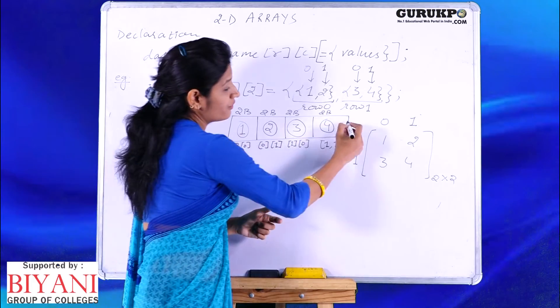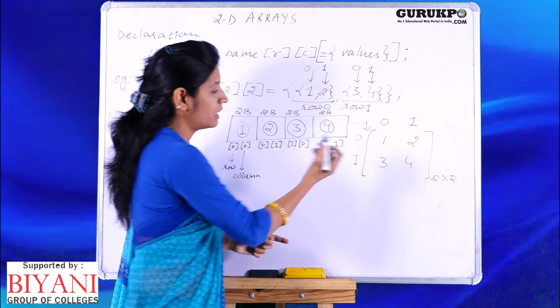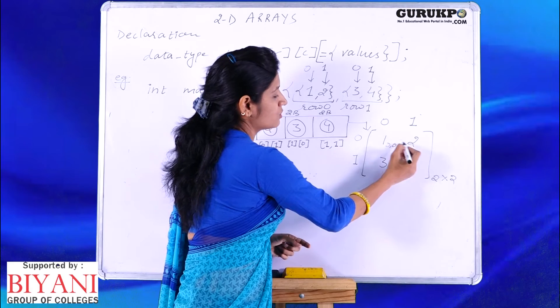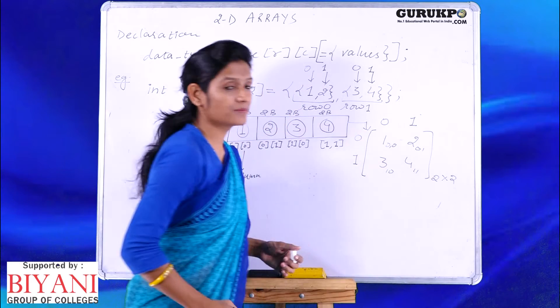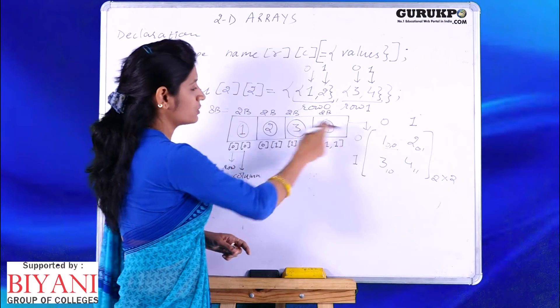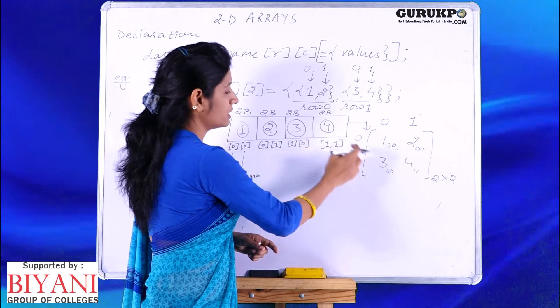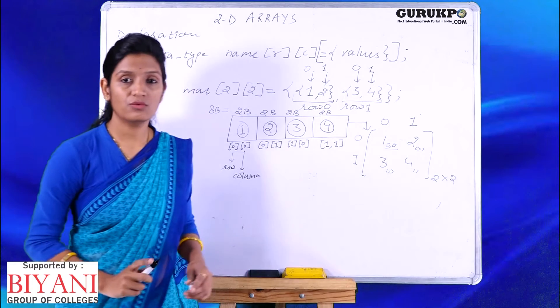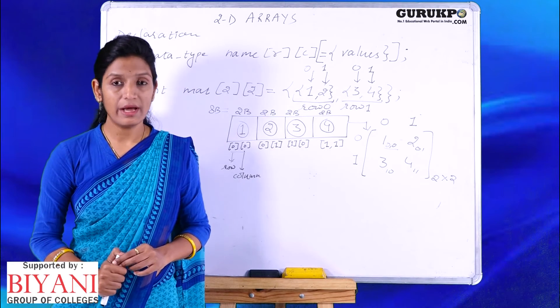How it will be related to a matrix? This is how we represent a matrix, and this is the index: 0,0, 0,1, 1,0, 1,1. You can check: 0,0 it is 1, 0,1 it is 2, 1,0 it is 3, and 1,1 it is 4. This is how we can declare two dimensional arrays.